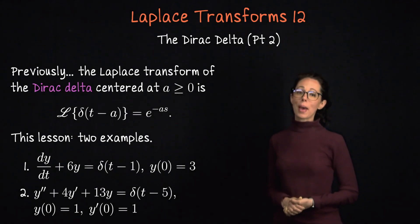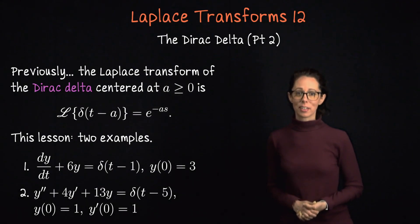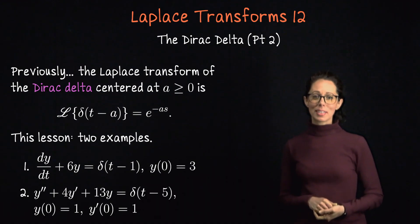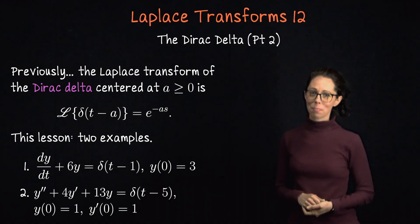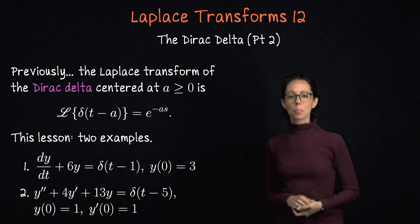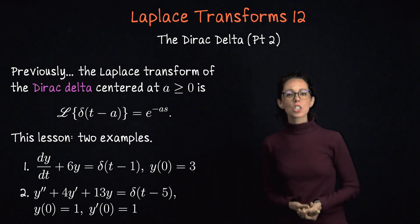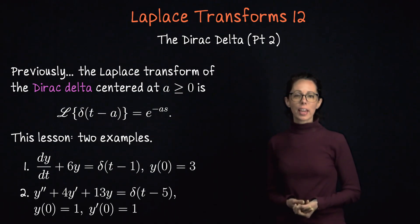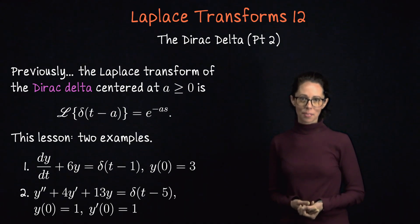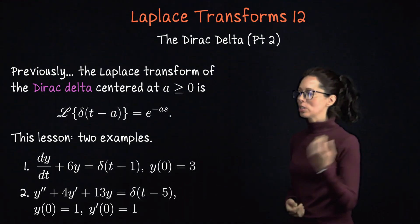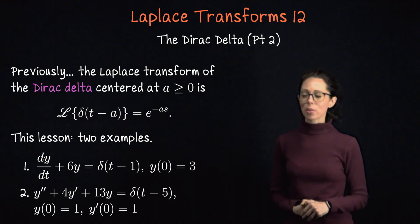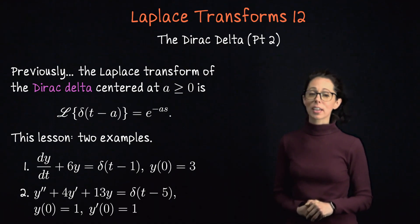In the last video, we met the Dirac delta, modeling a unit impulse at the moment t equals a. We worked out that the Laplace transform of this generalized function centered at a is e to the negative sa. In this video, we are just going to do some computation — we're going to work through two differential equations where the right-hand side looks like a Dirac delta.